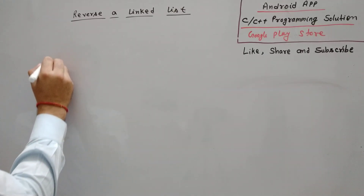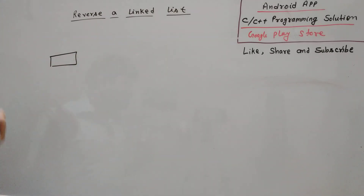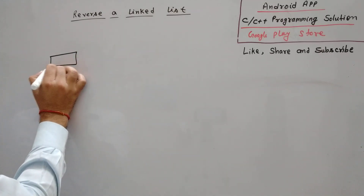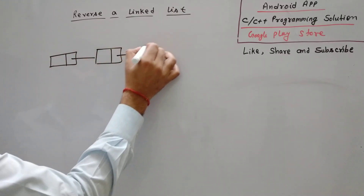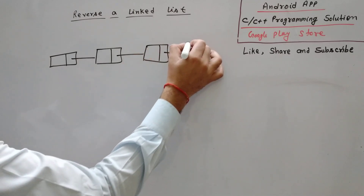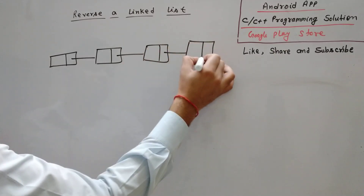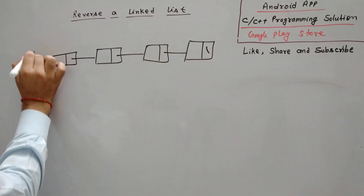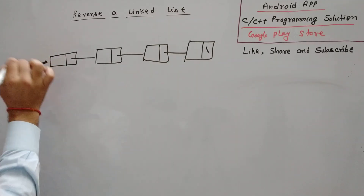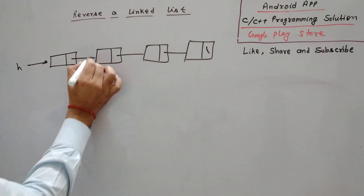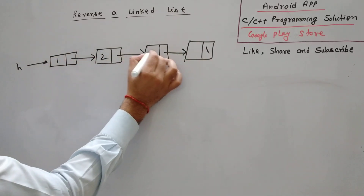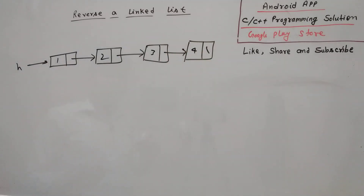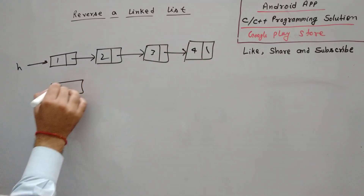We have a linked list. It might be possible that you will face the same question in your interview — we have a linked list and null. That means head is pointing to the first node. We have to reverse it. For example, if we have data 1, 2, 3, 4, we have to reverse the linked list.